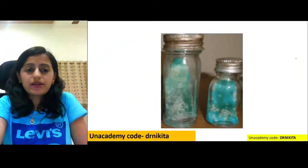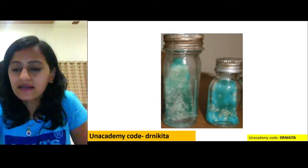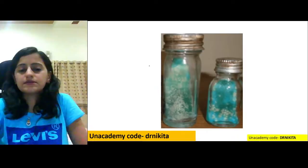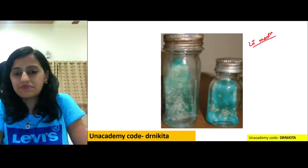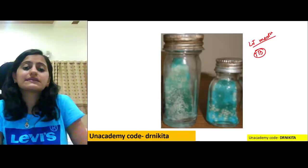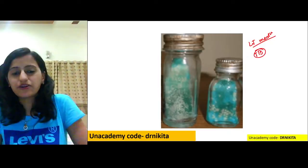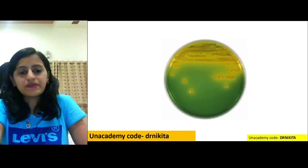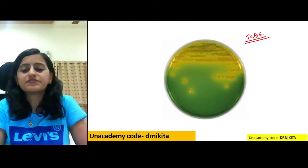This culture medium is the Lowenstein-Jensen (LJ) medium, used for mycobacteria including Mycobacterium tuberculosis, giving rough, tough, and buff colonies.